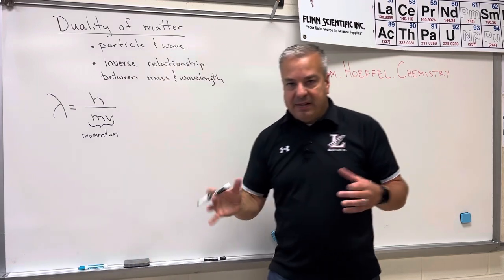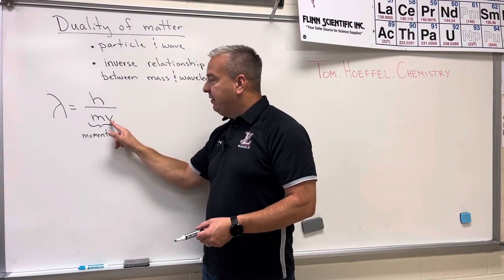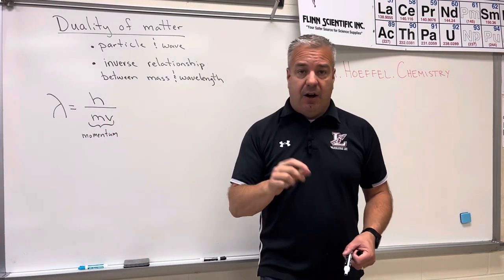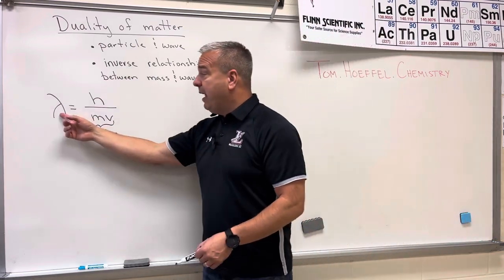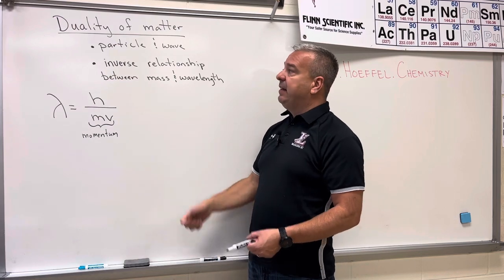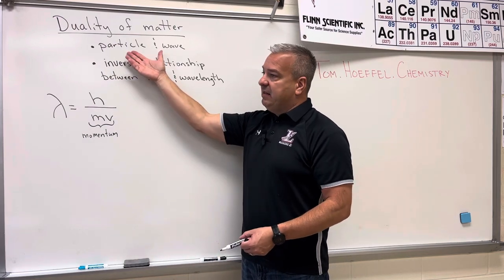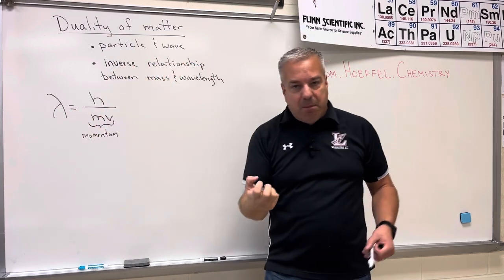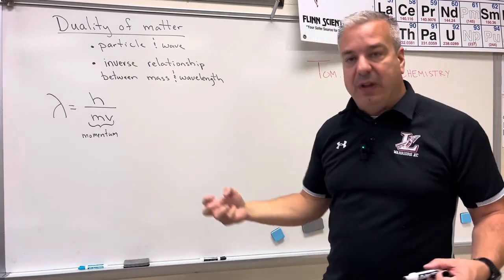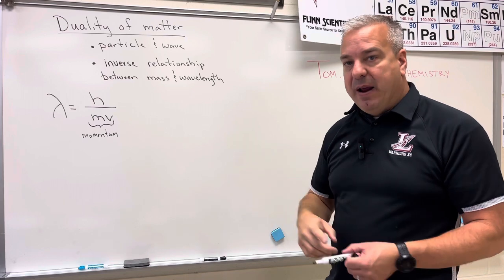So basically, if we have the mass and velocity or momentum of an object, that object would also have a wavelength based on this idea that all matter is like a particle and a wave. Therefore, every particle out there that's moving has a wavelength.